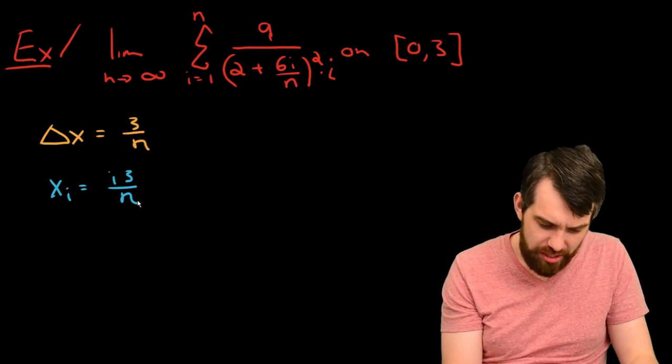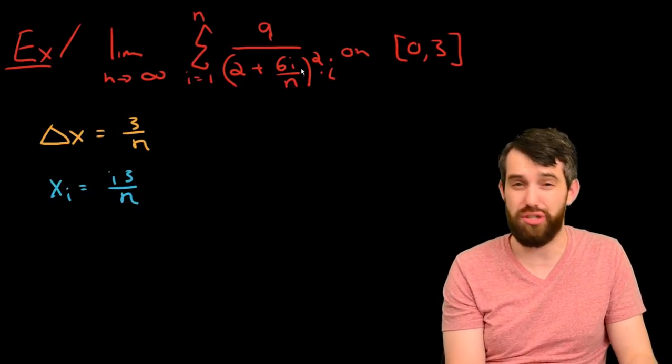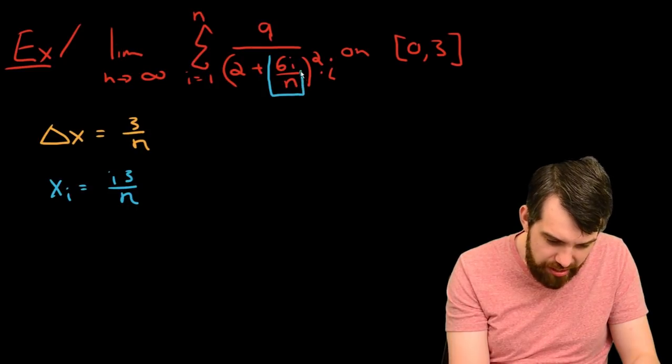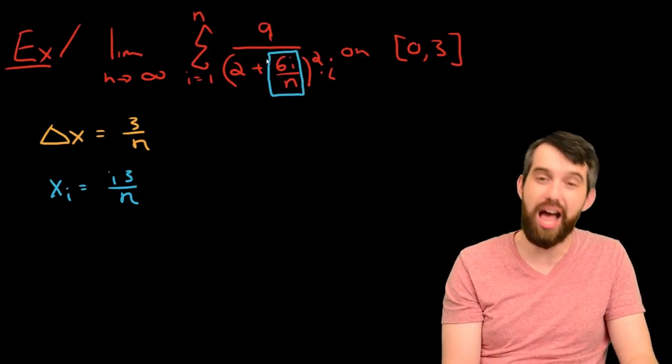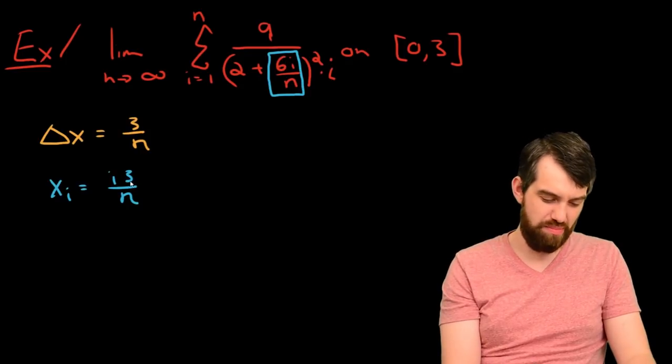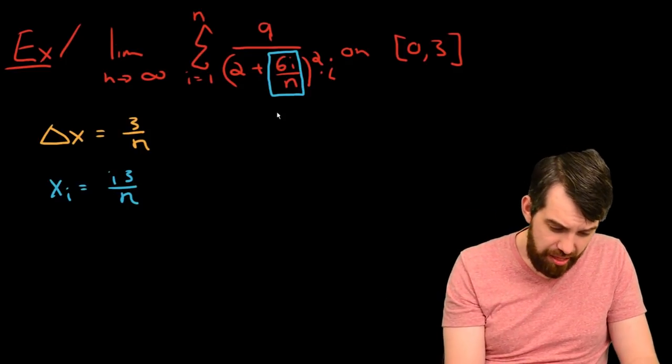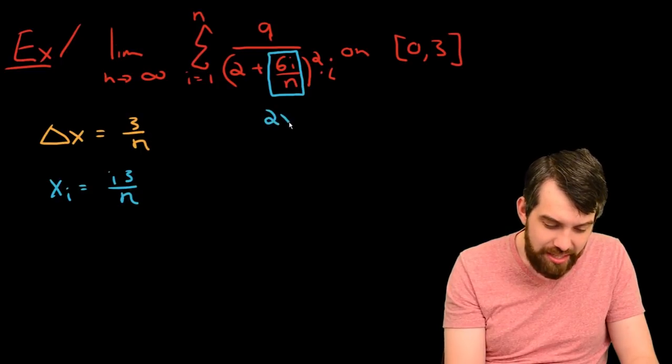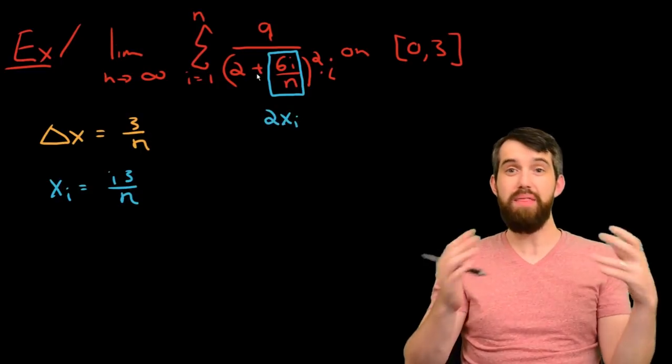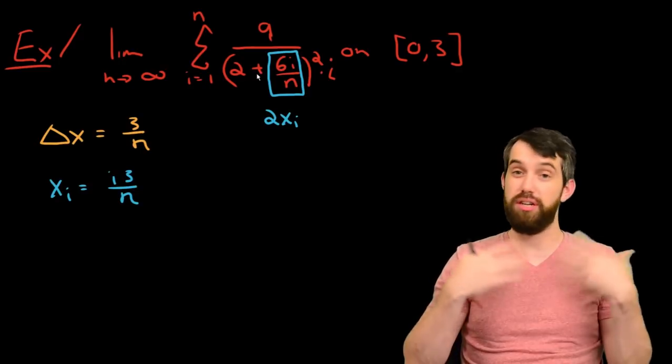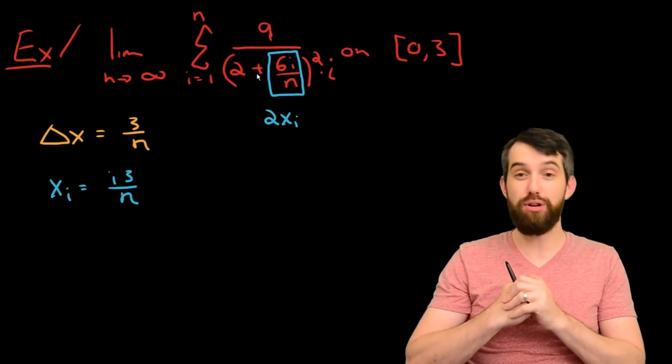So the first thing I'm going to focus on, I noticed that i actually occurs in two places in the sum, but I think the closest looking one is this guy right here, the 6i over n. Because 6i over n and 3i over n, they're pretty close. Indeed, this looks like twice x_i. And that's all right, because if I was translating this into a function, this would turn into 2x. So that portion of it I like.